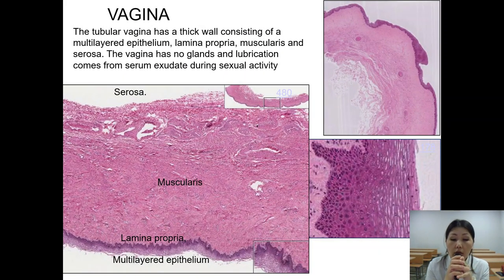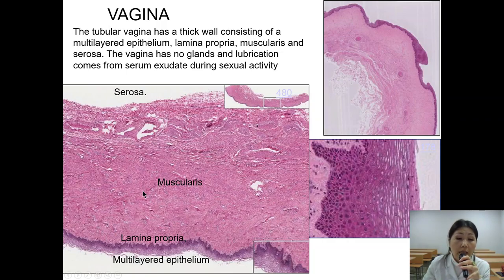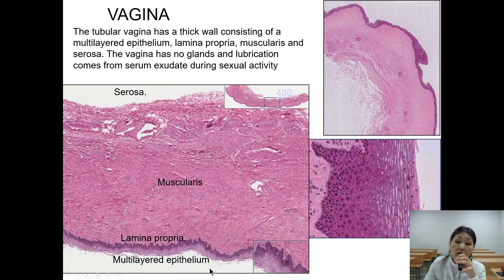On this diagram the histological structure and layers of the vagina are shown: serosa layer, muscularis, lamina propria, and multi-layered squamous epithelium. The tubular vagina has a thick wall consisting of multi-layered epithelium, lamina propria, muscularis, and serosa. As mentioned, the vagina has no glands, and lubrication comes from serum exudate during sexual activity.